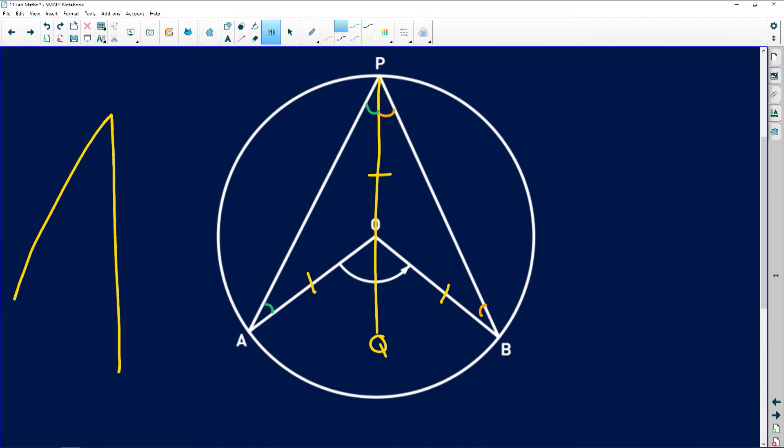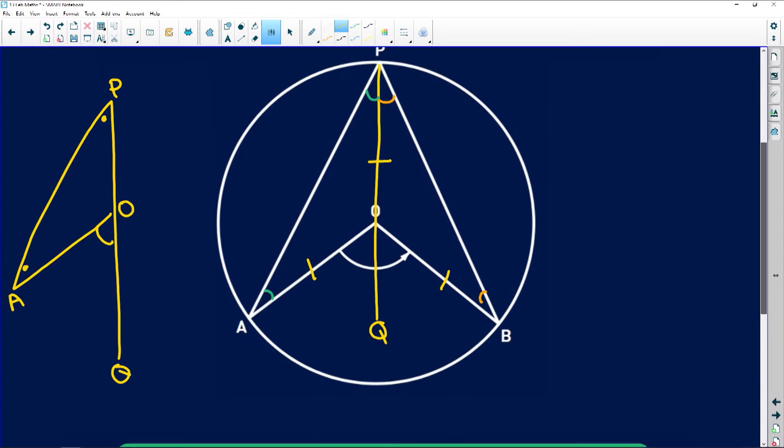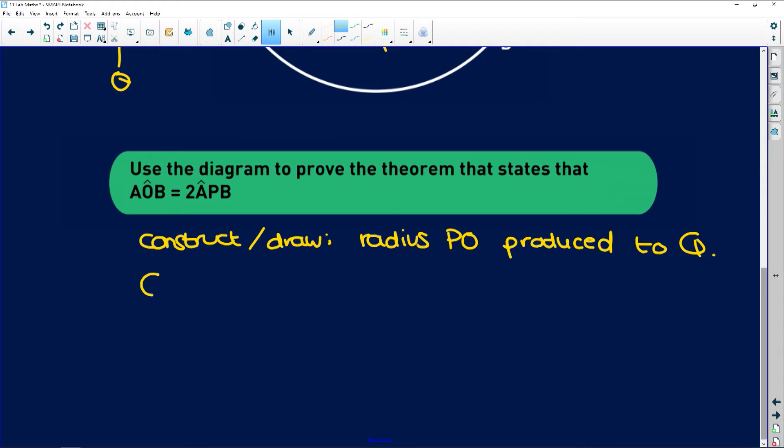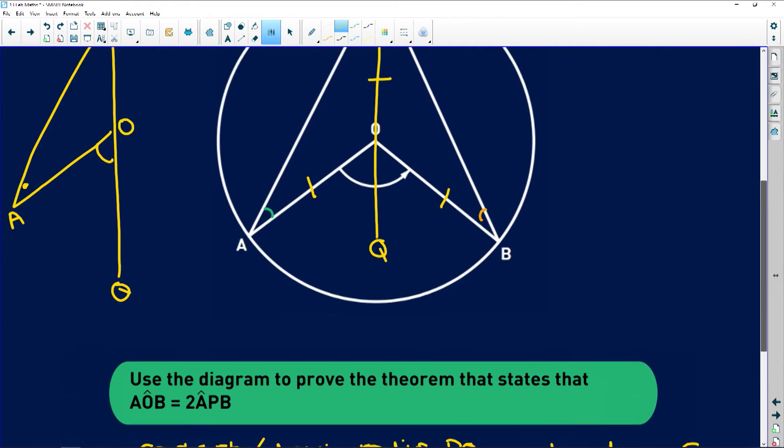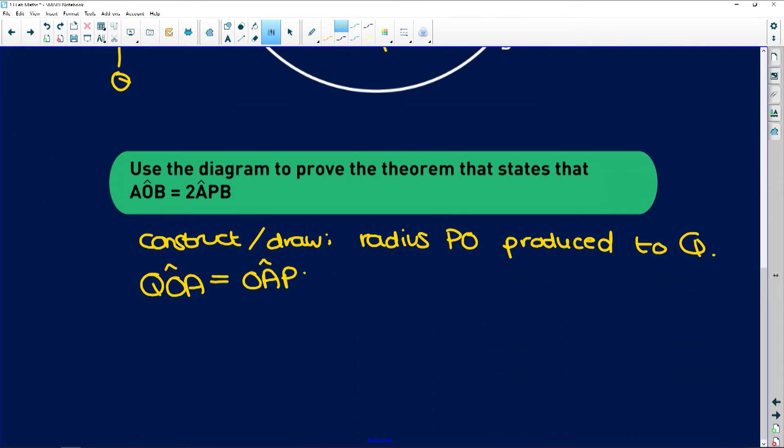I have this angle QOA, and that is equal to the sum of these two angles. Why? Exterior angle of a triangle. So if I say QOA is equal to OAP plus APO, exterior angle of a triangle. But OAP is equal to APO. Why? They are angles opposite equal radii.